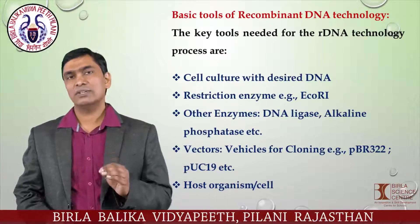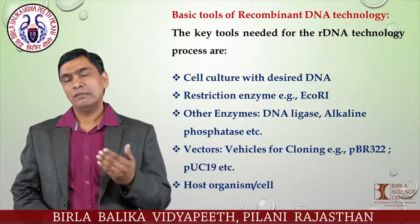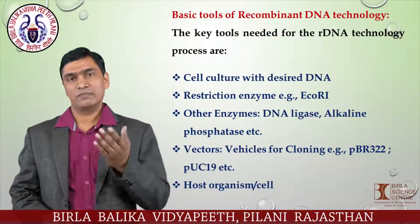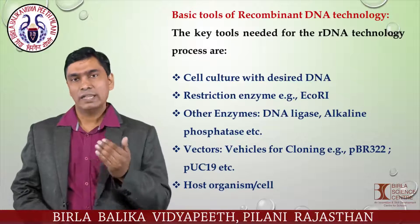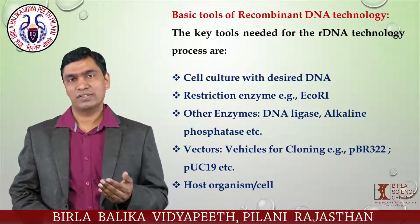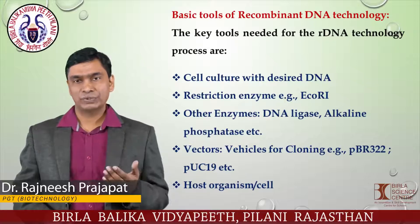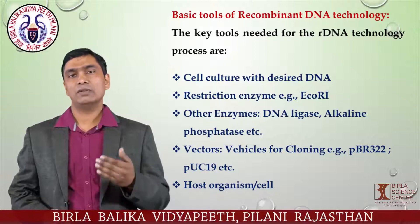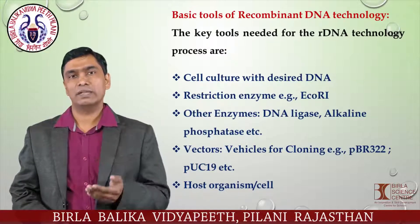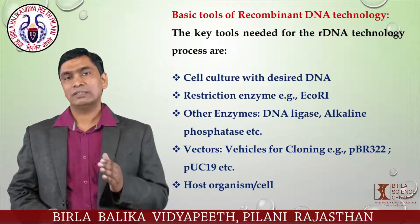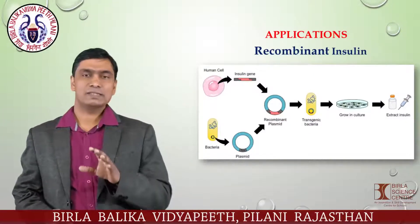The basic tools of rDNA technology are: first, a cell culture with the desired DNA — for example, the Bt gene from Bacillus thuringiensis; second, restriction enzymes — mainly Type 2 restriction enzymes, with EcoRI as one example; other enzymes like DNA ligase and alkaline phosphatase, which are very important for the formation of the recombinant vector; the vehicle of cloning, i.e., vectors — examples include pBR322, pUC19, cosmid, BAC, and YAC; and finally, the host organism for cloning.